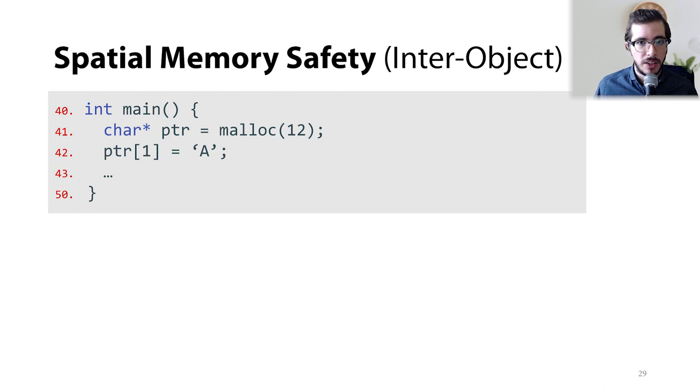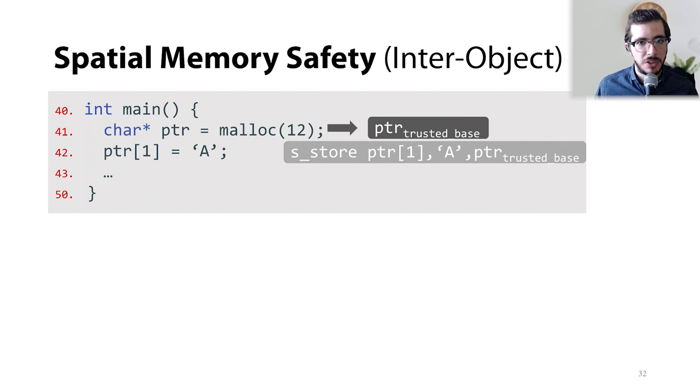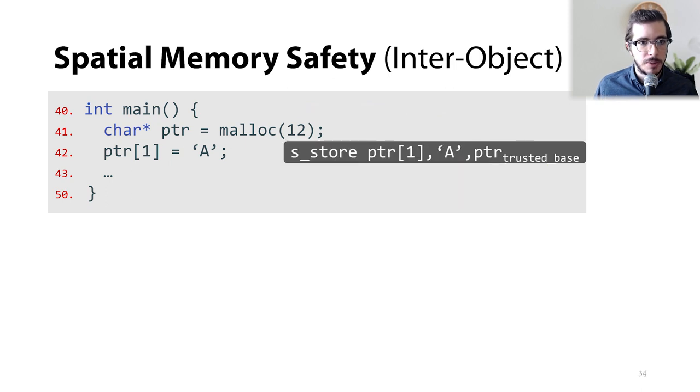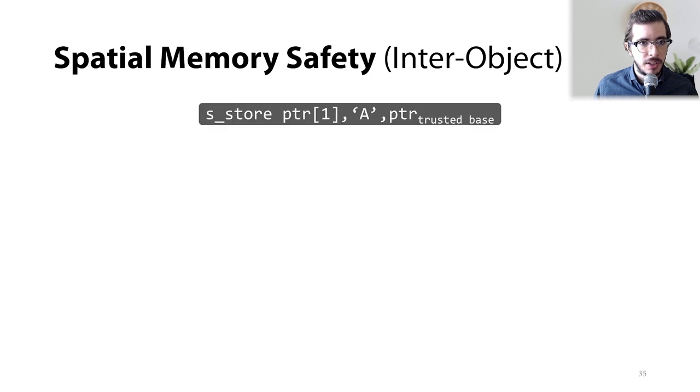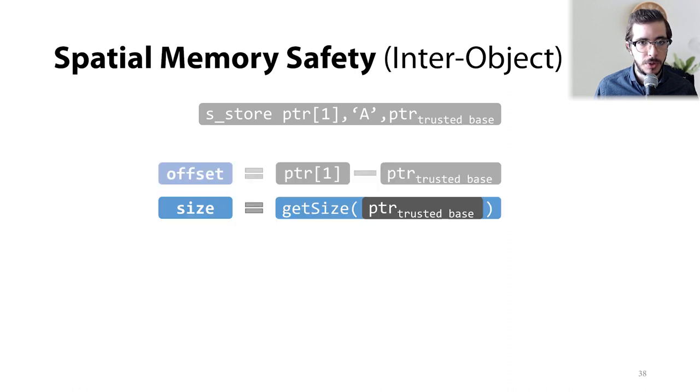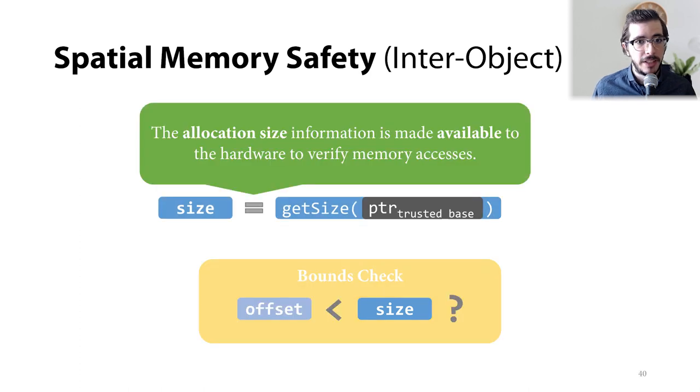Let's assume that after the memory is allocated, our program issues a store instruction to write the value A to pointer index 1. With NOFAT, every load and store instruction will have one more operand, which we call the trusted base. And this operand is propagated using the compiler, from the malloc output to the store input. Now, it's fairly easy for the store instruction to verify access bounds. The steps are straightforward. The hardware first extracts the trusted base and the address, in this case, pointer index 1, and subtracts them from each other to get the offset. Then, it retrieves the size of the trusted base pointer using the binning allocator metadata. And finally, it compares the offset to the size and flags a violation if the offset is not less than the size. So, in short, we make the allocation size information available to the hardware to help it verify memory accesses.